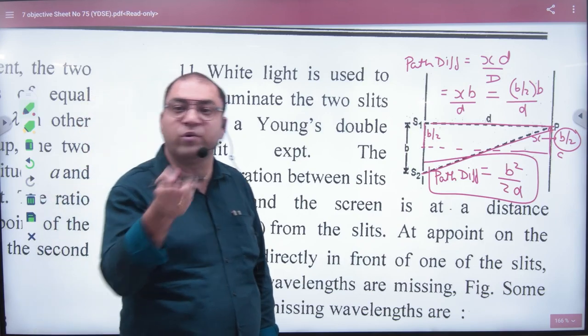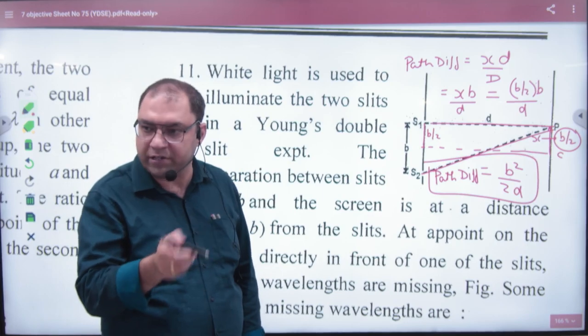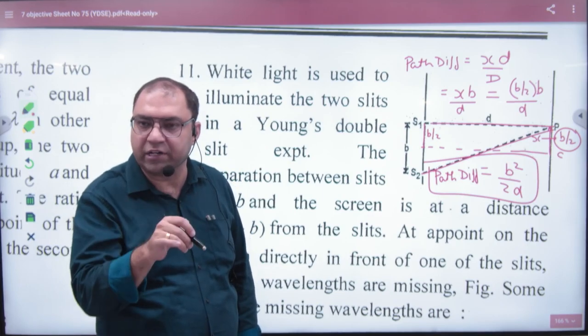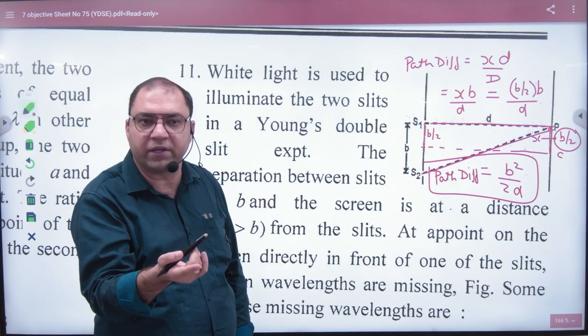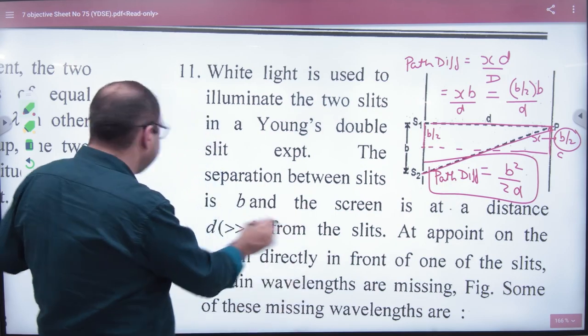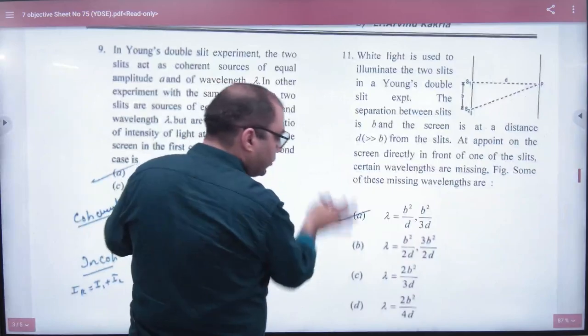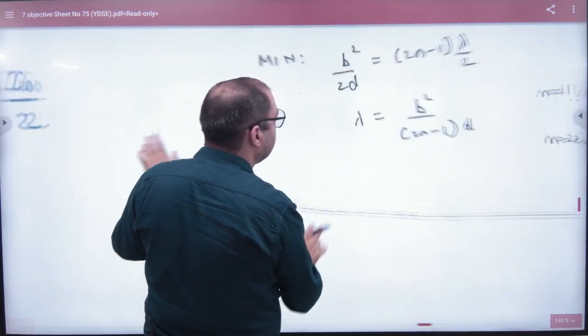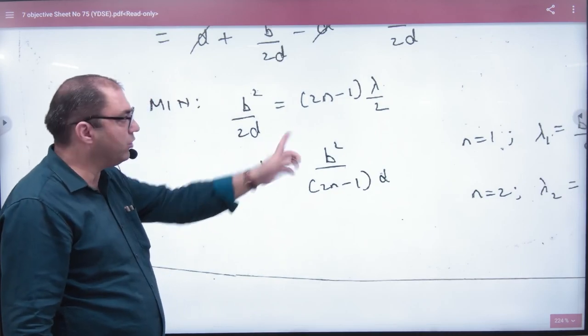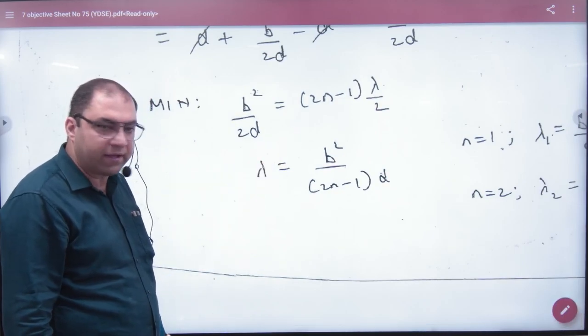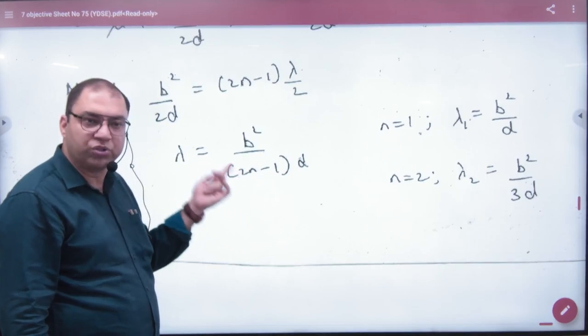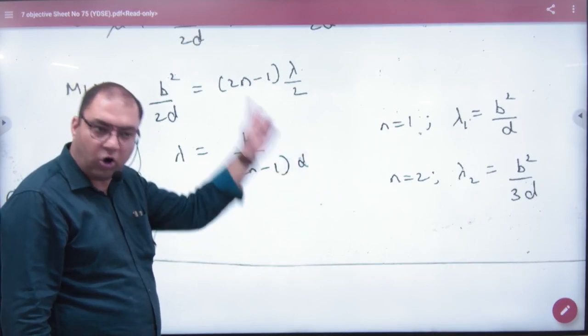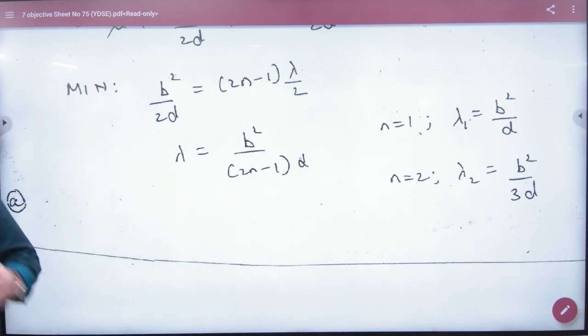2n minus 1 times λ/2. Because if path difference is 2n minus 1 times λ/2, then which interference is it? Destructive. So destructive means minima points. So this path difference, b²/2D equals 2n minus 1 times λ/2. Cross multiply for λ. Now put n equal to 1, 2, 3. Put the lambdas. What is the answer? The method is path difference equals 2n minus 1 times λ/2. The answer will come.